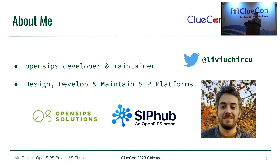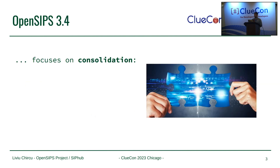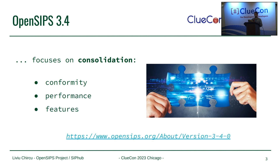A quick word about me: I'm a developer for OpenSIPs for nearly 10 years now, and apart from the work done for the project, I also helped design, maintain and develop various SIP platforms for our customers at OpenSIP Solutions and lately SIP Hub, the companies I work for. In the last year we've been at work on OpenSIPs 3.4, which just became stable last month, and it focuses on consolidation. Especially since it's an LTS release, we thought it's a good opportunity to focus on conformity, performance, and maybe also add some features if time permits.